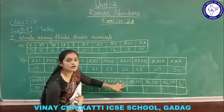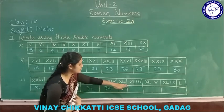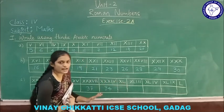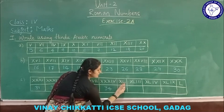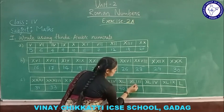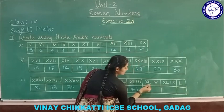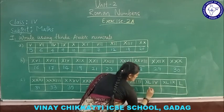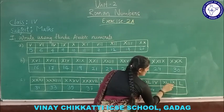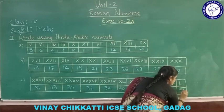L means 50. X before L is 10, and since X is greater than — wait, L is greater than X, it gets subtracted: 50 minus 10 equals 40. X L I I I is 43. X L I V is 44. X L I X is 49. L represents 50.